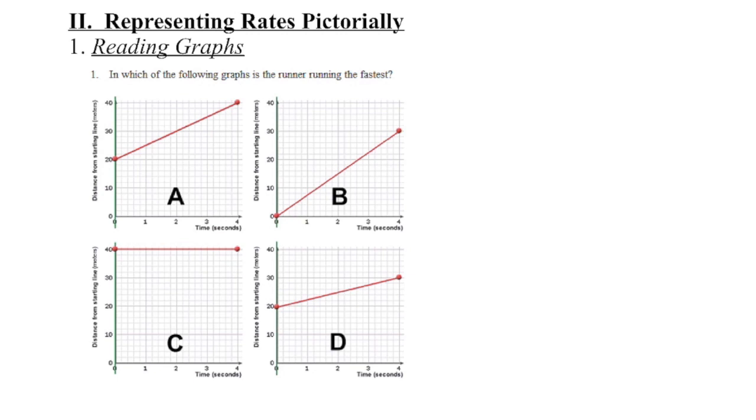In this case we want to know which runner happens to be running the fastest. If we take a look at graph C, the person begins 40 meters from the start line, 4 seconds go by and they're still 40 meters from the start line, they didn't move.